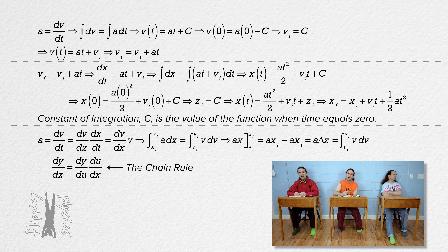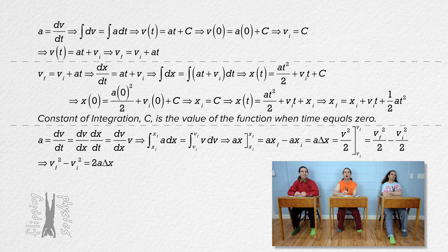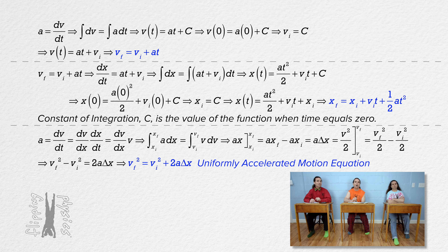The integral of velocity with respect to velocity equals velocity squared over 2. Adding the limits and substituting gives us velocity final squared over 2 minus velocity initial squared over 2. We can multiply the whole equation by 2, reverse the sides, and add velocity initial squared to both sides, and we get velocity final squared equals velocity initial squared plus 2 times acceleration times displacement. That is a third uniformly accelerated motion or kinematic equation.